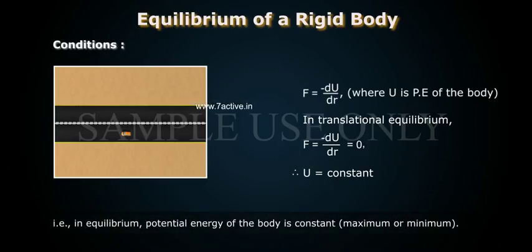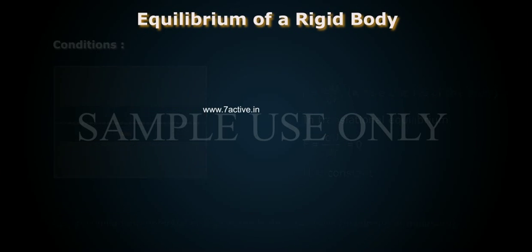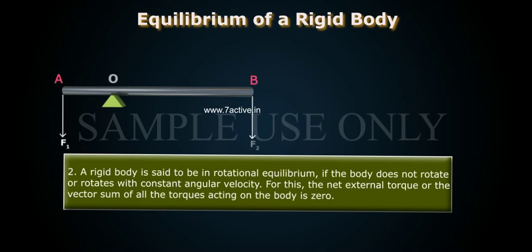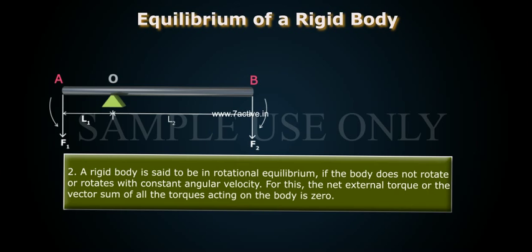That is, in equilibrium, the potential energy of the body is constant — maximum or minimum. A rigid body is said to be in rotational equilibrium if the body does not rotate, or if it rotates with constant angular velocity.